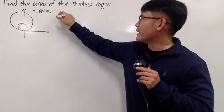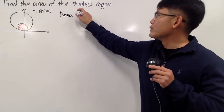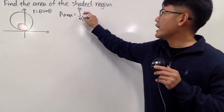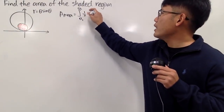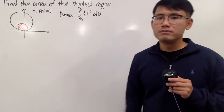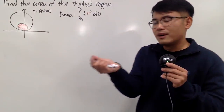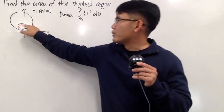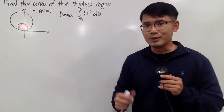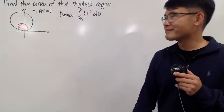Let me remind you guys the formula first. For the area of polar curves, we integrate from theta 1 to theta 2, and the formula is 1/2 times r squared d theta. This comes from the area of a sector — you use sectors to approximate, and when theta is very small, it's just like a sector and you add them up. In the regular sense we use rectangles, but here we use sectors.